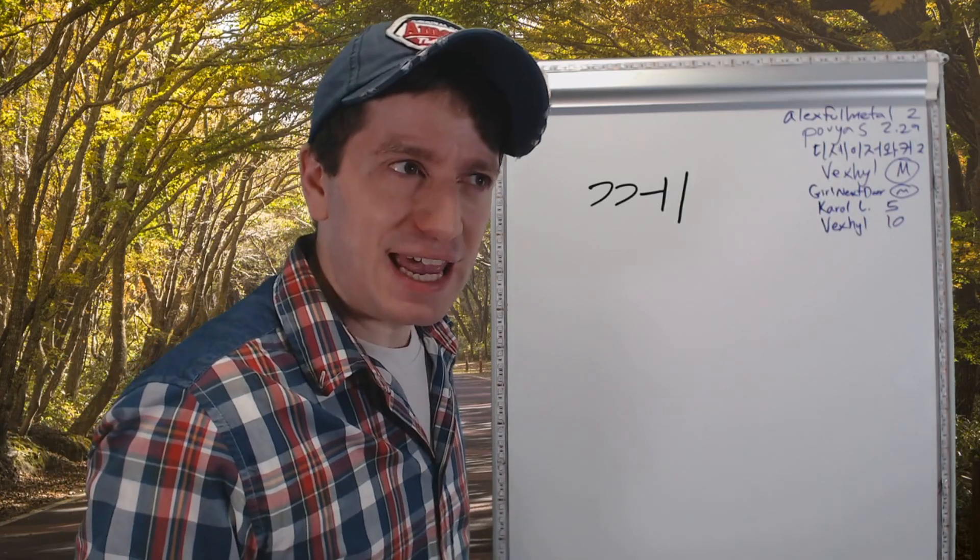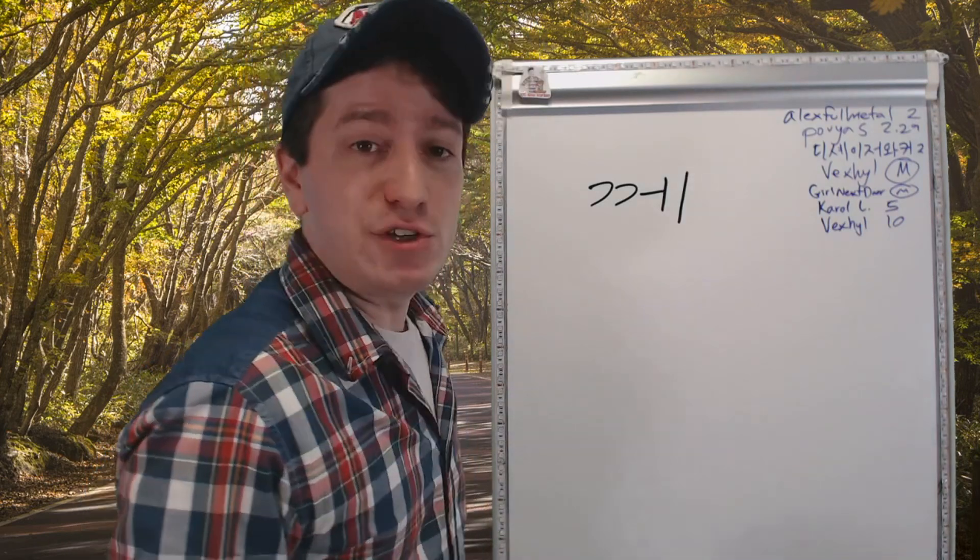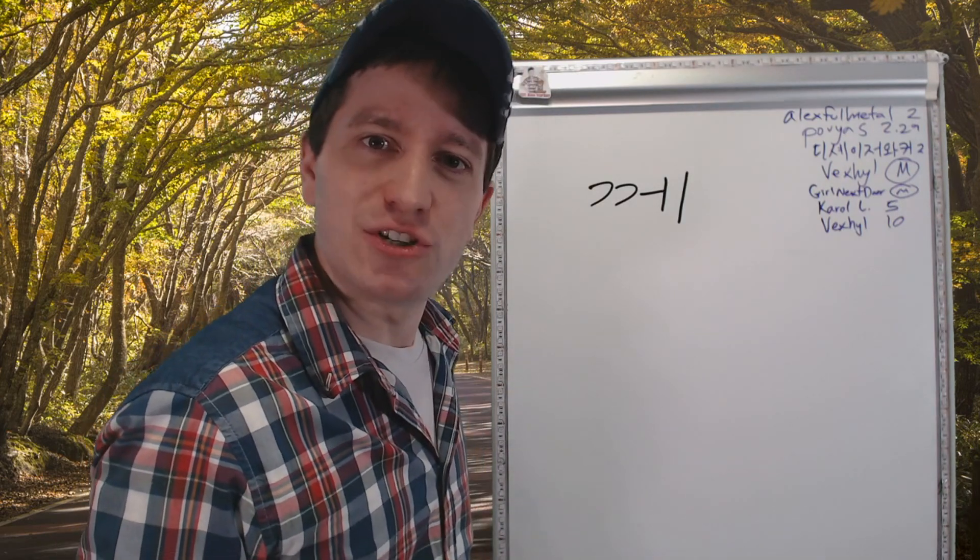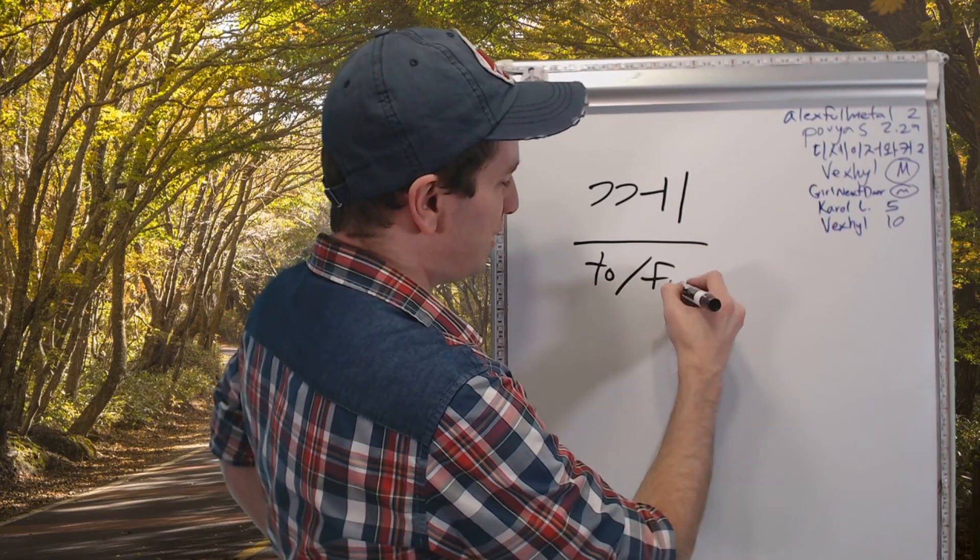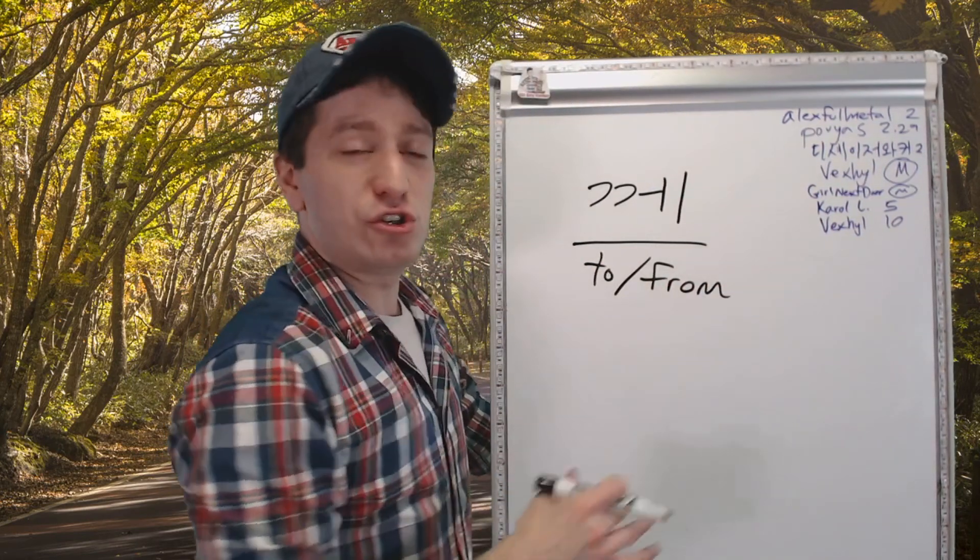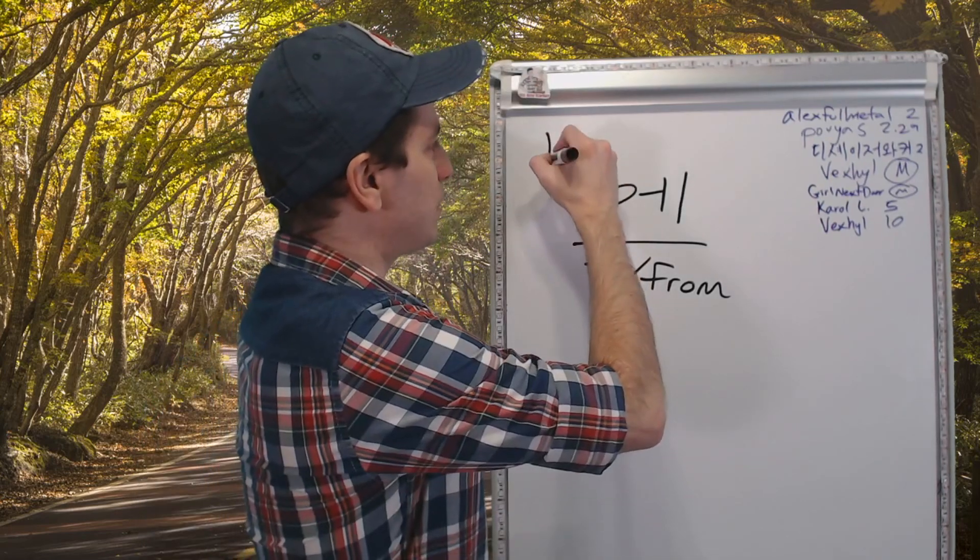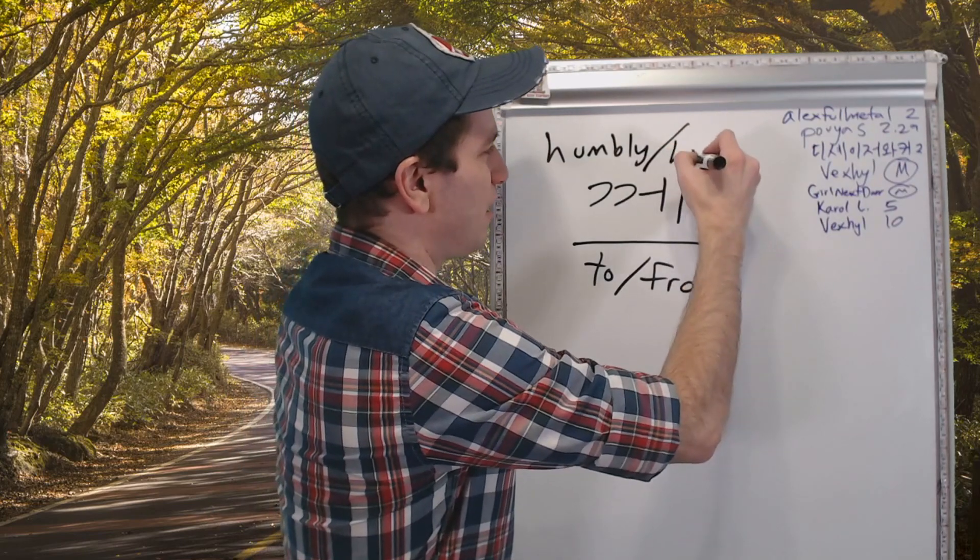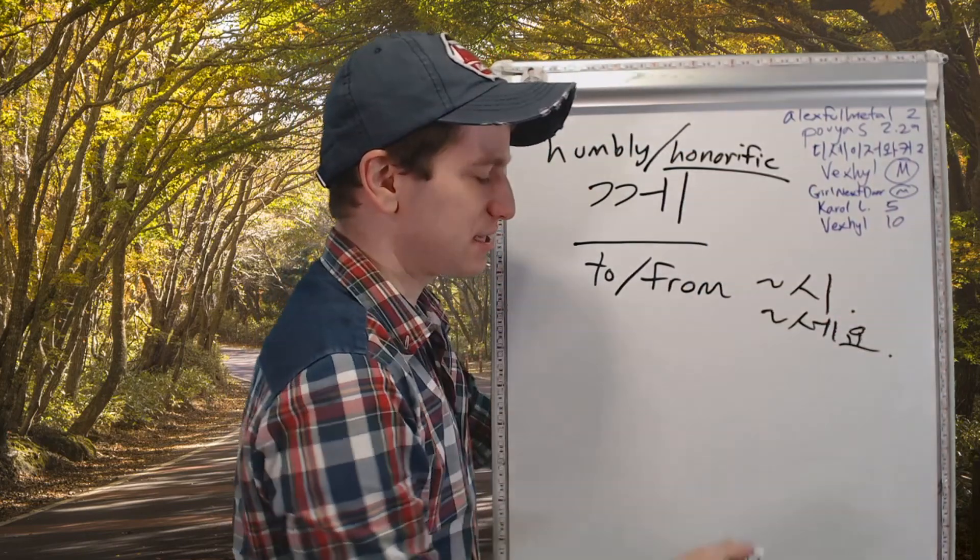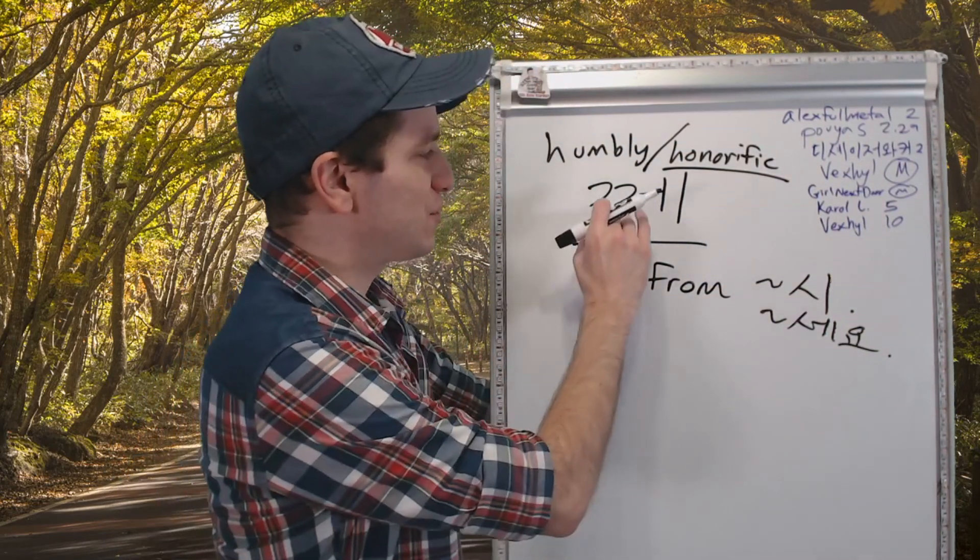Hopefully now you've seen how 에게 can mean both to and from, and you've seen how 한테 can also mean to and from. So if I tell you that this word means both to and from, it shouldn't be confusing. 께 means to, and it means from. And this is whenever you're speaking humbly about yourself towards someone else, or whenever you're speaking in honorific when you're talking about someone else, and you want to be extra polite, use 께.